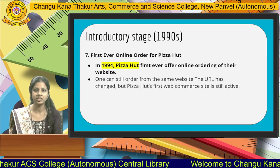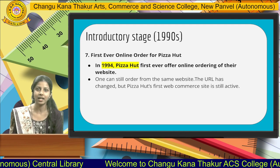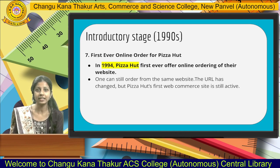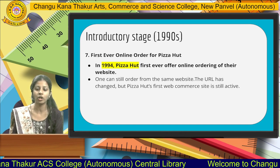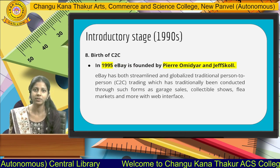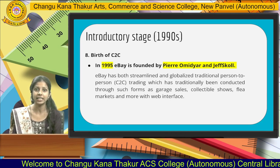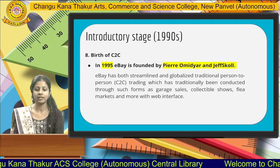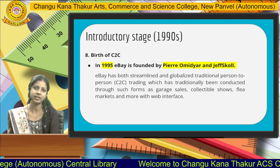In the introductory stage, the first ever online shopping was made through a pizza order. In the year 1994, Pizza Hut delivered the first online pizza to a customer. This first e-commerce website is still active today. Then we have the birth of C2C — consumer to consumer — the online model of e-commerce. eBay was founded by Pierre Omidyar and Jeff Skoll, and through it, the first online shopping carried out for basic consumer-to-consumer purposes was realized.